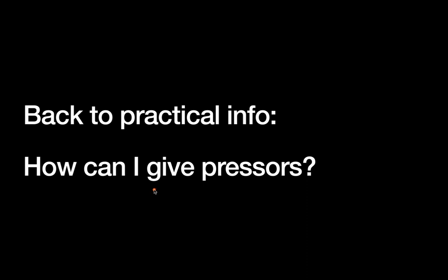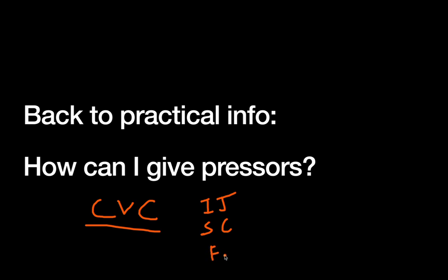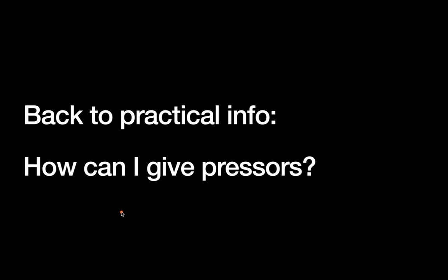How can you give pressors? Pressors are somewhat toxic medications — not great to get in peripheral tissues — so ideally they're given through a central venous catheter placed in the IJ, subclavian, or femoral veins. However, a crashing patient often won't have a central line. It is okay to give vasopressors through a good peripheral IV — meaning relatively large (18 or 20 gauge), relatively proximal (not in the hand), ideally placed under ultrasound guidance. This is acceptable for a short time, but you should plan to get central access as soon as safely possible.